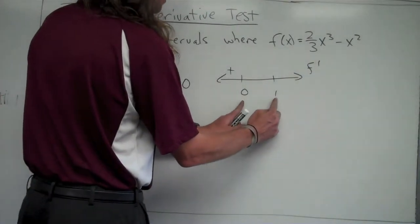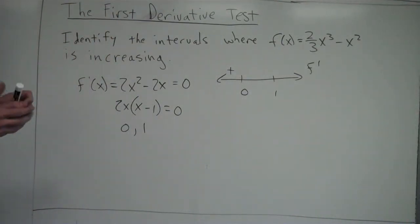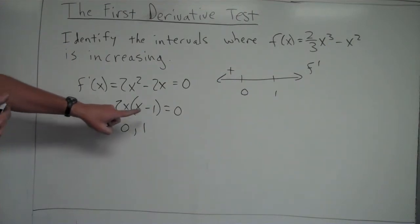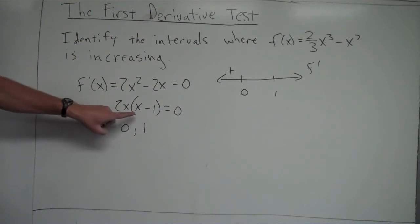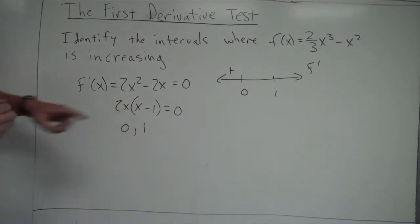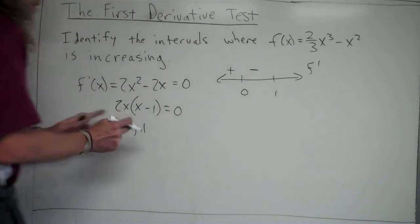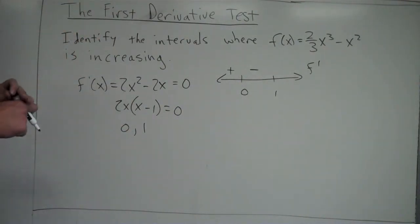Between zero and one, I'll pick x equals one-half. Plugging one-half into 2x gives positive one. Plugging one-half into x minus one gives negative one-half. Positive times negative is negative, so f prime is always negative in the interval between zero and one.